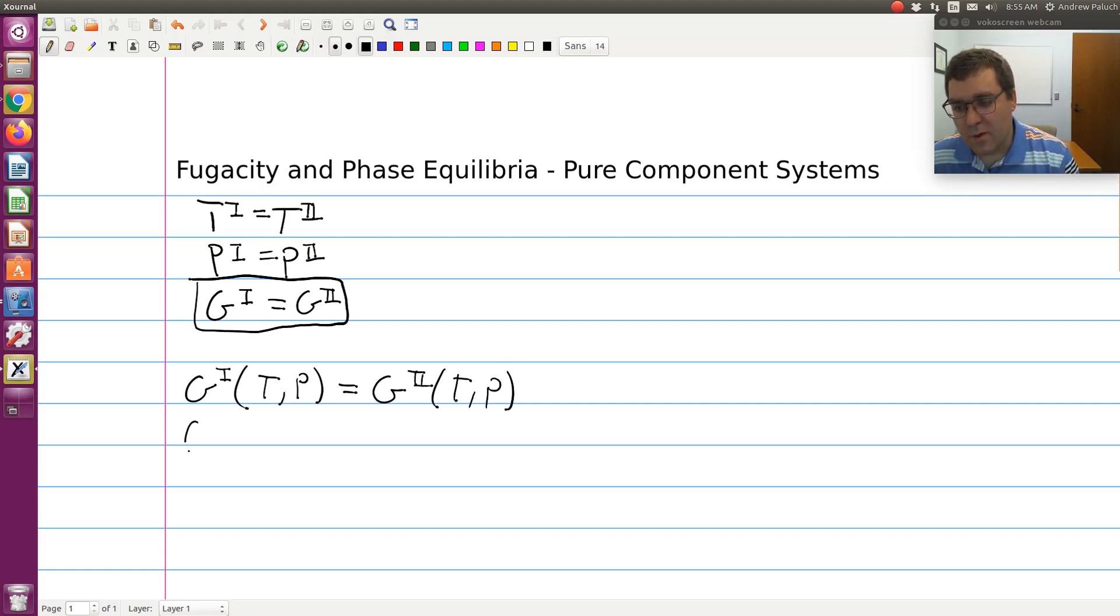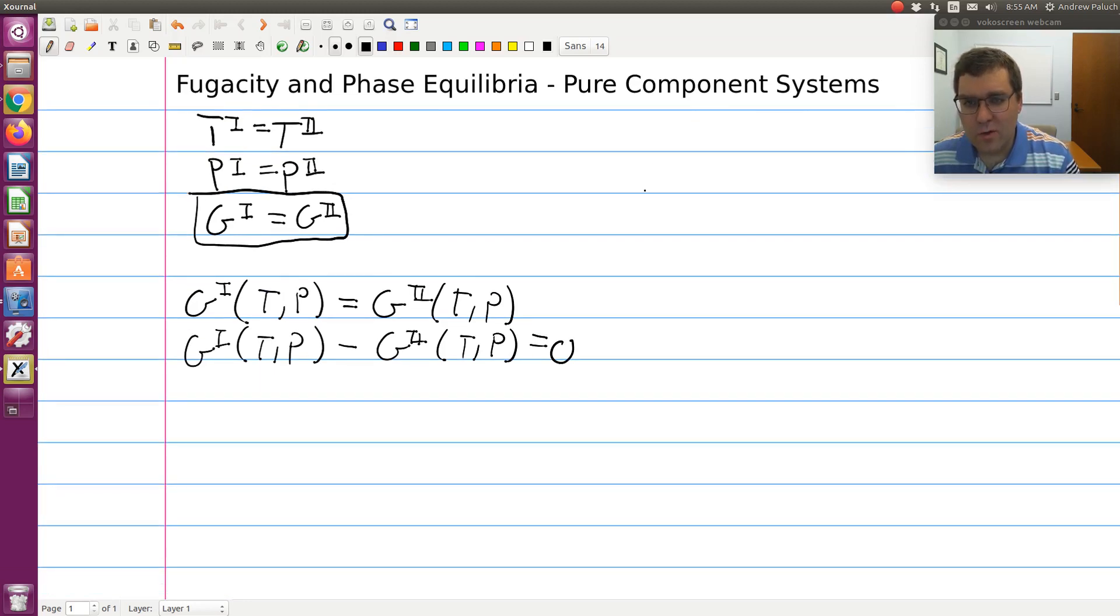Or I could equivalently write this as G1 at T,P minus G2 at T,P is equal to zero. Where here, one and two is just indicating some arbitrary phase one and two in coexistence. It could be vapor-liquid coexistence. One could be vapor, two could be liquid, or vice versa. It doesn't matter.